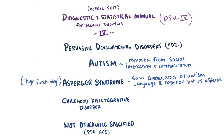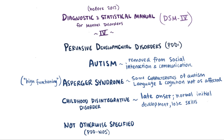Childhood disintegrative disorder was used to describe late onset of developmental delays, so these children develop normally for their age, but then they seem to lose the acquired social and communication skills sometime between age 2 and 10. Pervasive developmental disorder, not otherwise specified, is essentially a catch-all category in which patients meet some, but not all features of autism, Asperger's syndrome, or childhood disintegrative disorder.